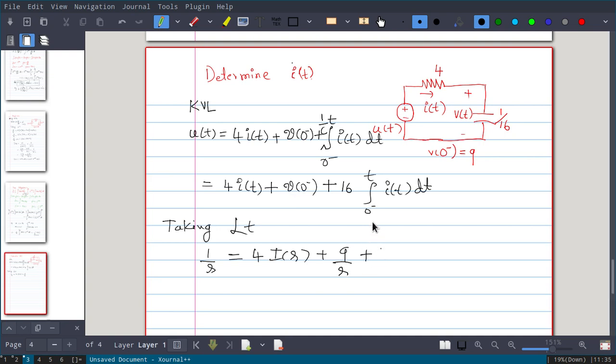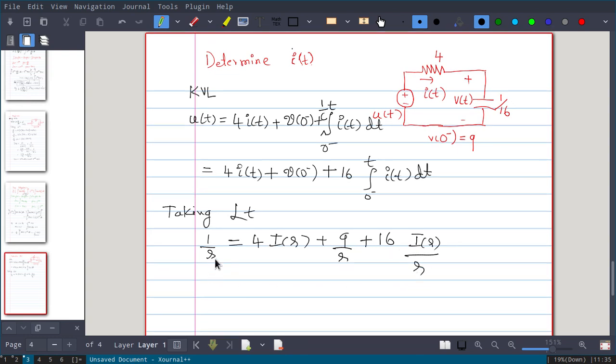Now this one, the integration of i(t) dt: if you take Laplace transform of that, you will get i(s) divided by s. So 16 times the integral from 0- to t of i(t) dt is 16 times i(s)/s.